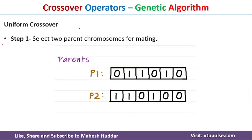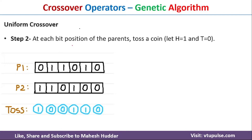The next crossover operator is uniform crossover. We select two parents P1 and P2, then determine crossover positions by tossing a coin for each gene. Heads is marked as 1, tails as 0. In this case the outcomes are: 1, 0, 0, 1, 1, 0 for the six genes.